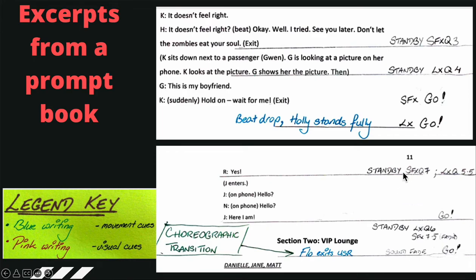Sometimes you have movement cues where the stage manager watches the screen and calls the cue based on a visual trigger, such as when an actor stands fully upright for a blackout, or when a character says a specific line for a sound cue to start. The whole essence of a prompt book is that if the stage manager were to fall sick, somebody else — whether the ASM or another person — has to be able to pick up that book and understand clearly what to do and when to do it. It must be extremely organized.